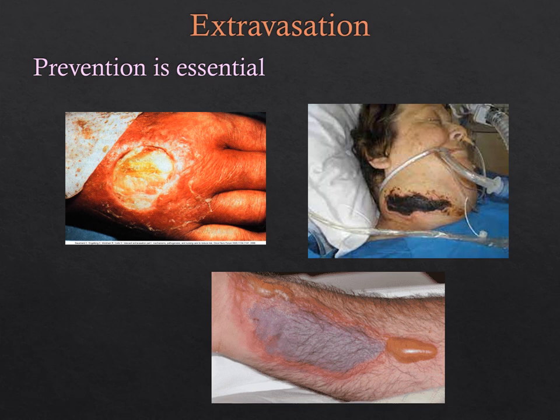Prevention of extravasation is essential when giving IV chemotherapy. Continuously monitor the IV site. If extravasation is suspected, stop the IV infusion immediately, aspirate any remaining drug or blood from the tube if possible, follow instructions for giving the appropriate antidote, remove the catheter, cover the area with a sterile occlusive dressing, apply a warm or cold compress depending on the drug and type of extravasation, and rest and elevate the affected limb. Prevention through careful IV site monitoring is the best approach.